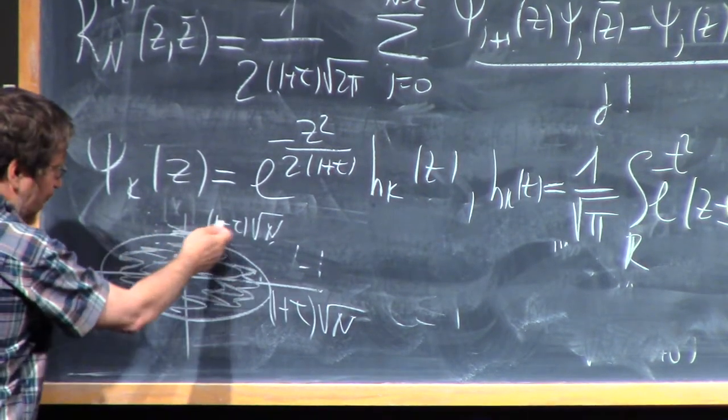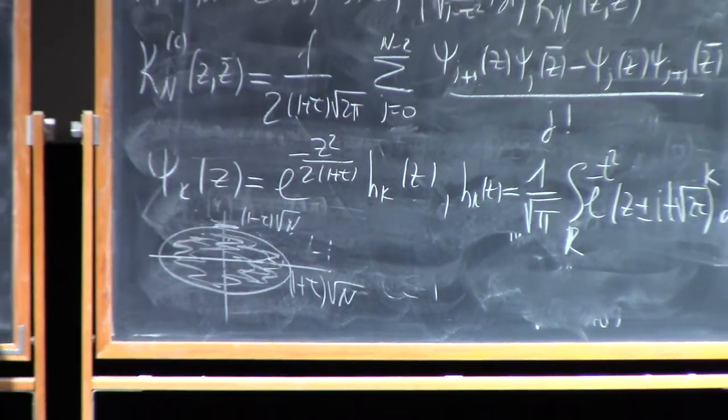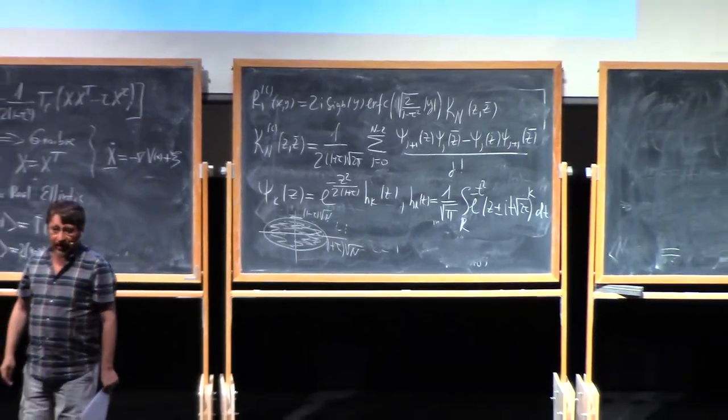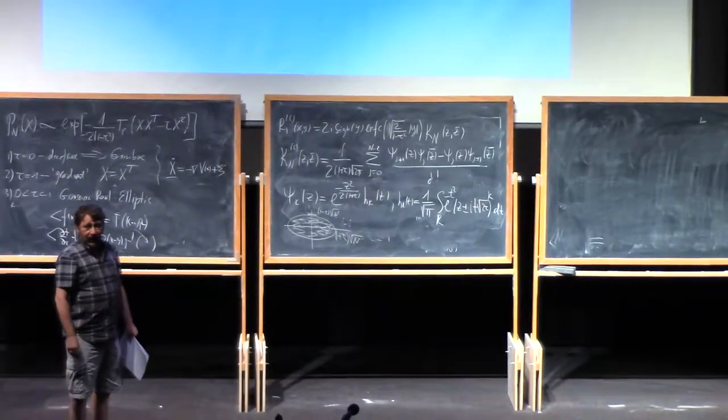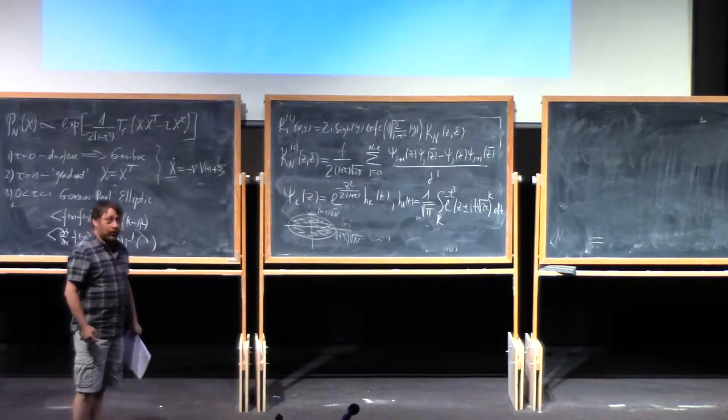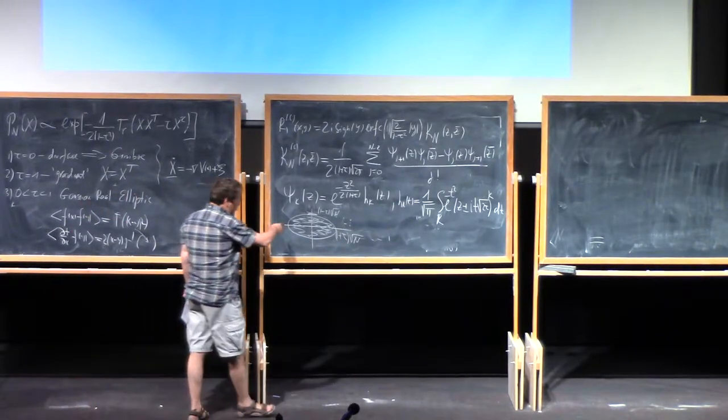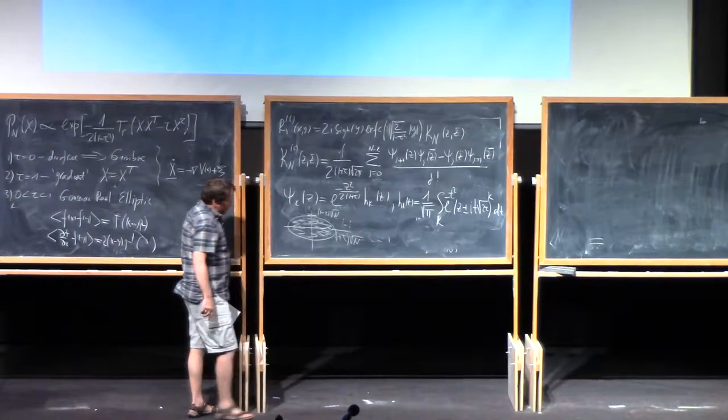Also in the limit tau approaching 1, this vertical direction shrinks, and all eigenvalues eventually become real when tau is equal to 1.